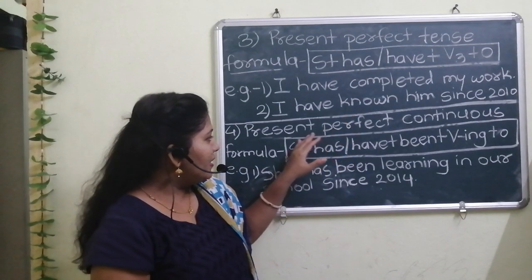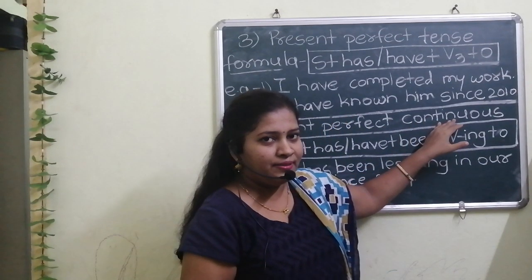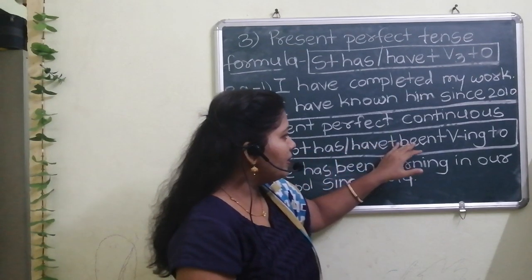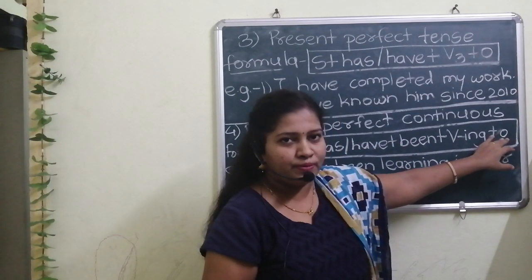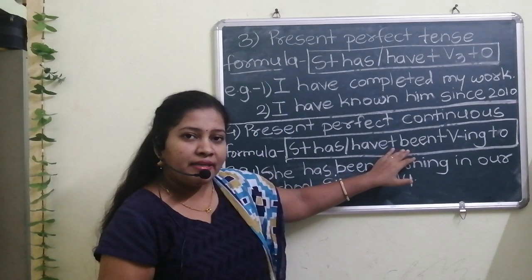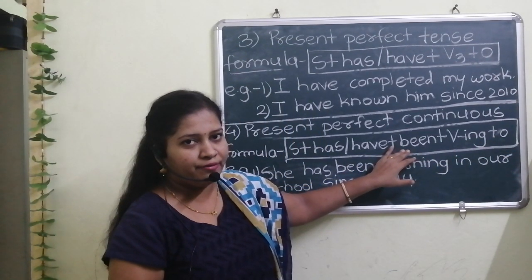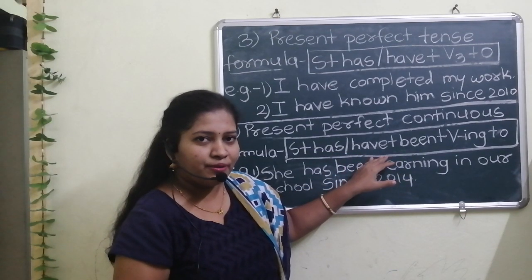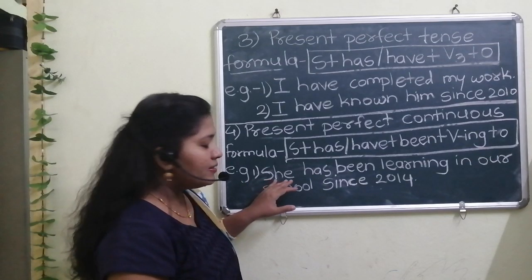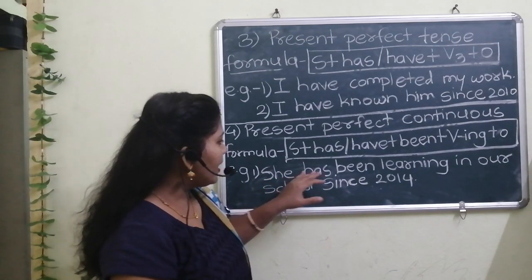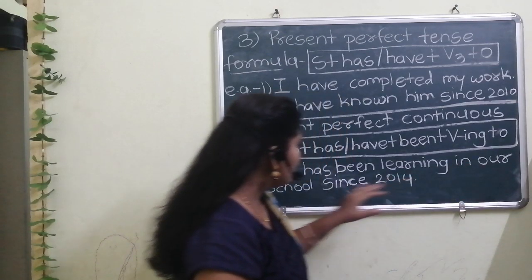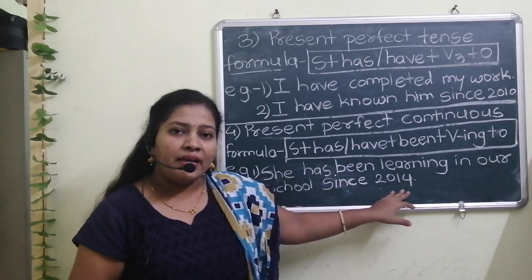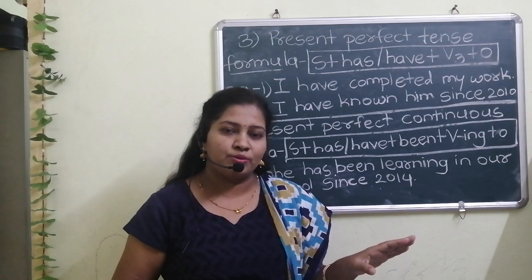The second tense is present perfect continuous tense. The formula is: subject plus has/have plus been plus V-ING plus object. Here 'been' is also working as an auxiliary or helping verb, along with has and have. For example: She has been learning in our school since 2014.